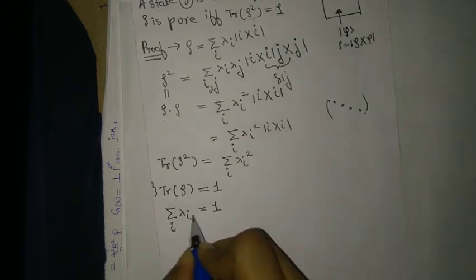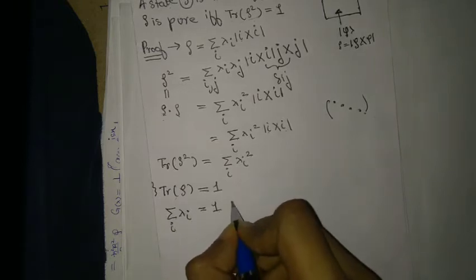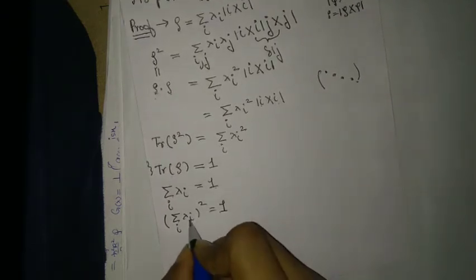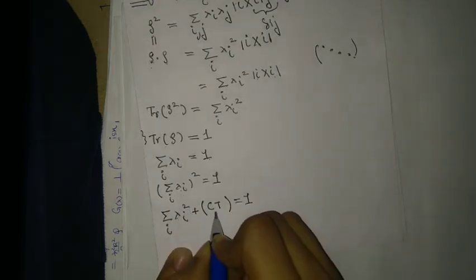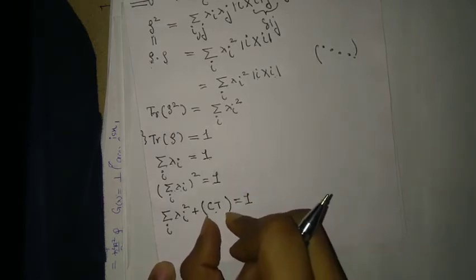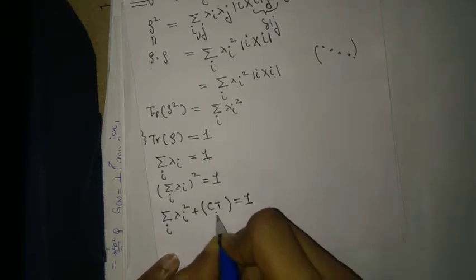Now I am going to square both sides of Σᵢ λᵢ = 1. Squaring gives Σᵢ λᵢ² plus cross terms of the form λᵢ λⱼ (i ≠ j). Observe that every cross term is positive, so the entire cross-term sum is a strictly non-negative quantity.